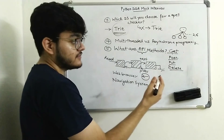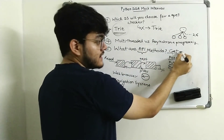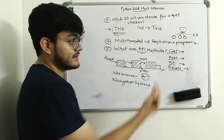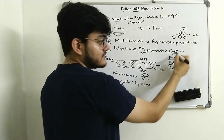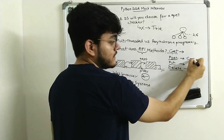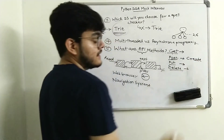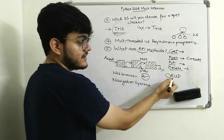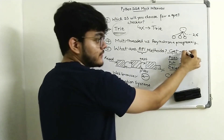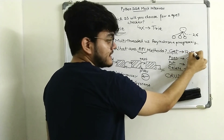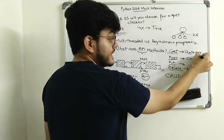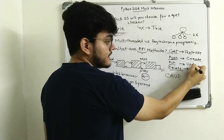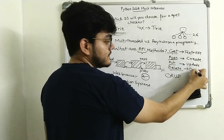The interviewer then asked what these methods are used for. Basically these are the CRUD operations — CRUD stands for Create, Retrieve, Update, and Delete. If you want to retrieve data, you use the GET method. To create something, you use POST. To update, you use PUT. And to delete, you obviously use DELETE.